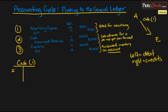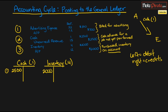Cash is a debit entry for $2,500, so we'll post $2,500 on the debit side and put a little one next to it to show that this was our first cash entry. There was no cash entry in the first transaction, so even though this is our second actual transaction, it is our first one involving cash. Our next reference number is inventory, which is number four — that's a debit entry for $2,000, marked with a one because it is the first inventory entry.